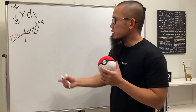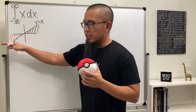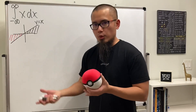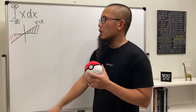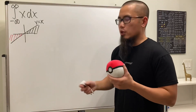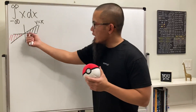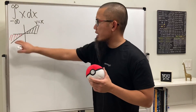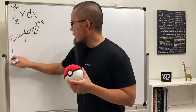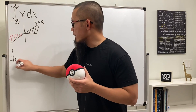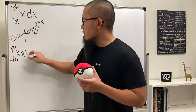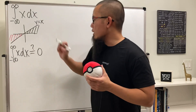And of course, this region here — because it's below the x-axis — will give you a negative value for the corresponding integral. Likewise, this region here will give you a positive value. Together, it seems like they will just cancel each other out. Therefore, it seems like the answer to the integral from negative infinity to positive infinity of x is just going to be equal to 0.